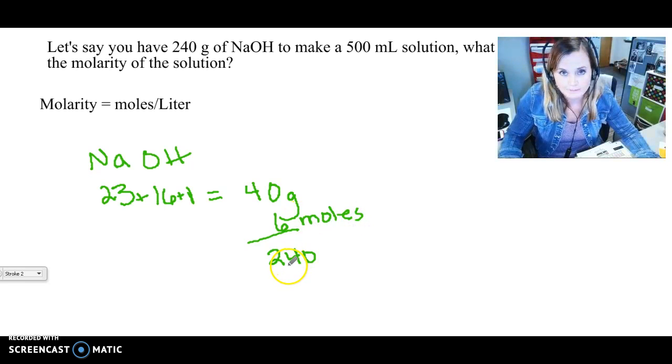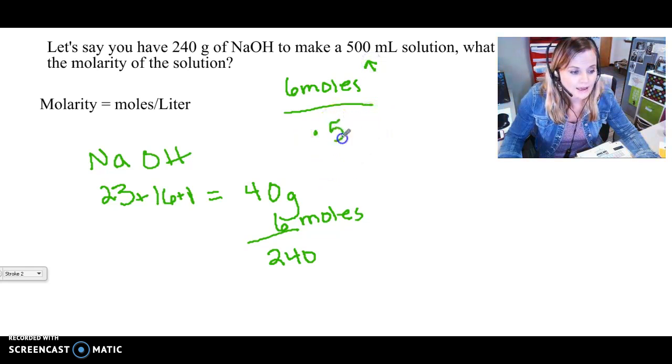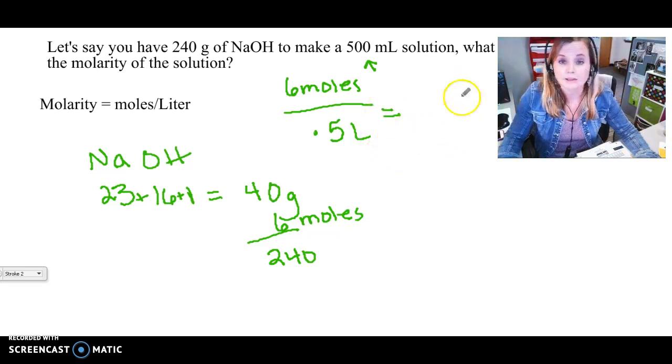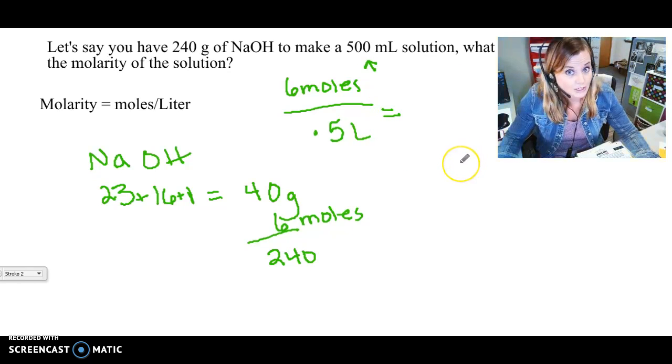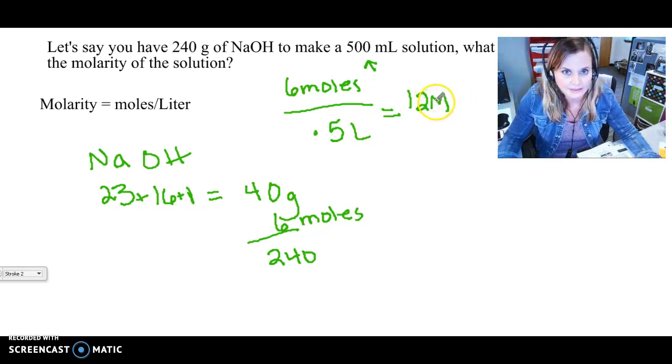So we have six moles and we don't have a liter, we have half a liter. So we're gonna divide this by 0.5 liters or by one half. Dividing by a half is the same as multiplying by two, so if you didn't know that then you learned something new today, otherwise just use your calculator which works just as good. And what you'll find when you do this is you got a 12 molar solution.